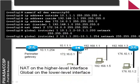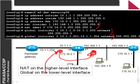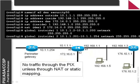With NAT we typically define NAT on a high-level interface and global on the lower interface. Global is what's seen outside and that translates into a NAT — these are the addresses inside the network and these are the addresses accessible from outside. No traffic is allowed through the PIX unless it goes through a NAT translation or is a static mapping. Typically, hosts in the DMZ might be available through a static mapping because we want them to have a fixed IP address rather than from a pool.